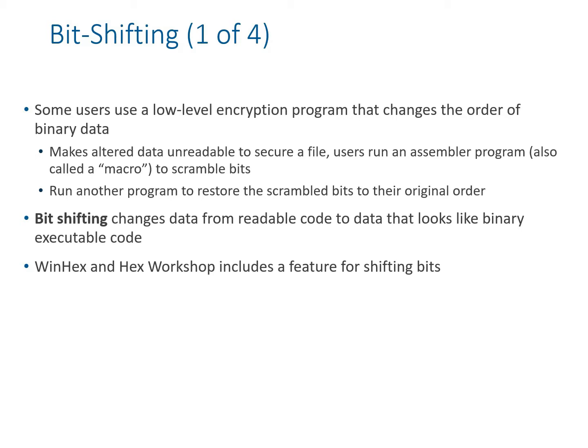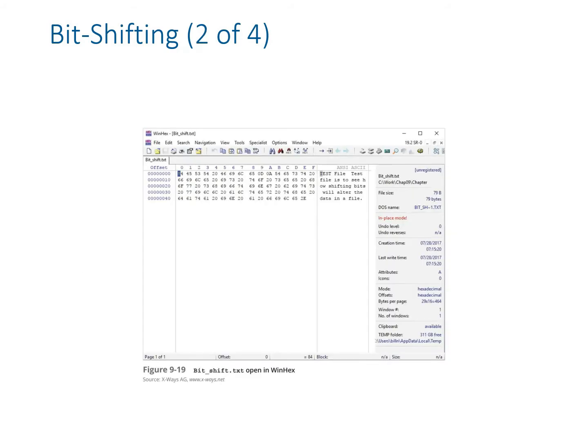It depends on how skilled the person is in assembly language and how many bits have been shifted to scramble the data. Some users use a low-level encryption program that changes the order of the binary data, making it unreadable. Users run an assembler program, also called a macro, to scramble the bits, then run another program to restore the scrambled bits back to the original position. Bit shifting changes data from a readable code to something that looks like a binary executable file. WinHex and Hex Workshop include bit shifting features.